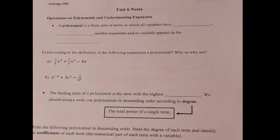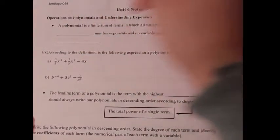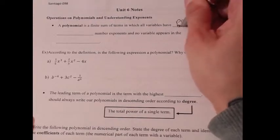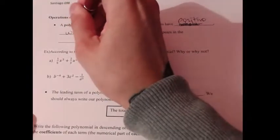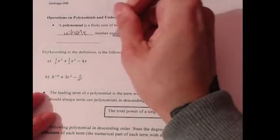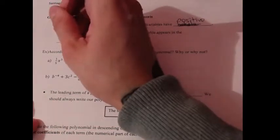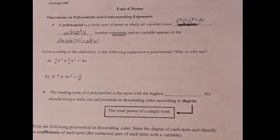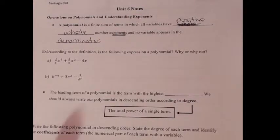A polynomial is a finite sum of terms in which all variables have positive whole number exponents and no variable appears in the denominator. So a polynomial is a finite, countable sum of terms in which all variables have positive whole number exponents — that's the key — and no variable appears in the denominator.